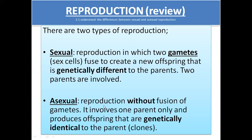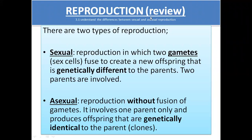Asexual reproduction occurs without the fusion of two gametes. It involves only one parent and produces offspring that are genetically identical to the parents. Why? Because only one parent is involved, there is no gametes formation, gametes are not coming from two different organisms, and there is no process of meiosis involved. Because of this reason, the offspring that are produced will be genetically identical, meaning they will be similar to their parents.